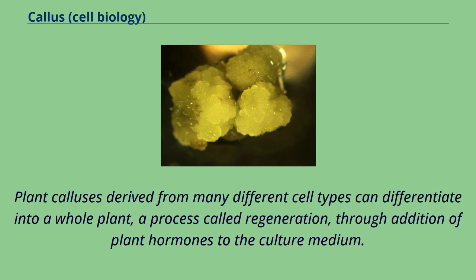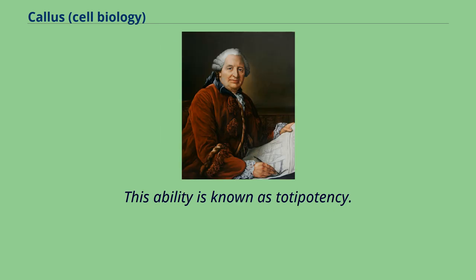Plant calluses derived from many different cell types can differentiate into a whole plant, a process called regeneration, through addition of plant hormones to the culture medium. This ability is known as totipotency.